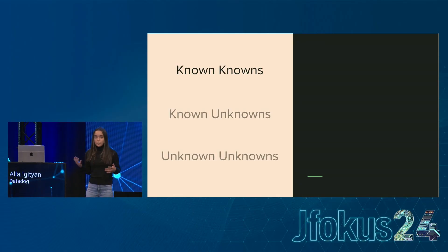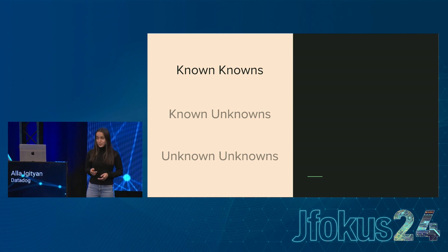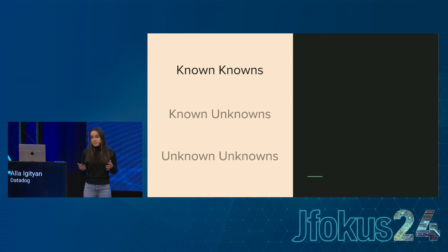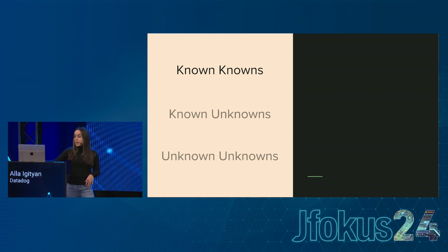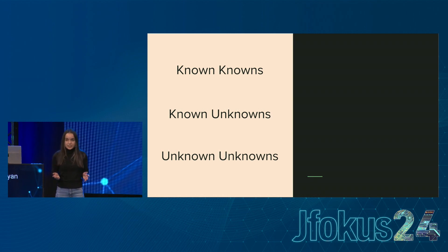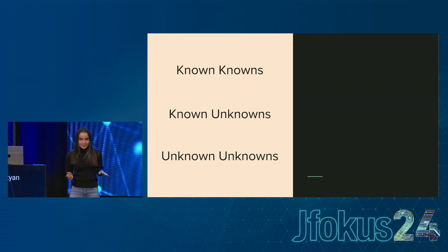Let's understand what kind of issues we're looking to solve. When it comes to performance issues, there are three broad categories: known-knowns, known-unknowns, and unknown-unknowns. Known-knowns are challenges we are well aware of — something you might discover during a peer's pull request review. Known-unknowns are issues we're aware might come up but still require investigation. Unknown-unknowns are the scariest — they are unexpected, unidentified issues that catch you by surprise but often require immediate attention.